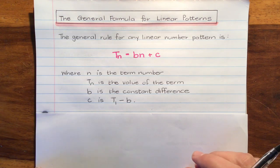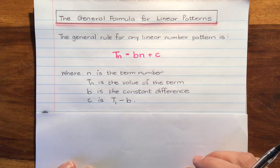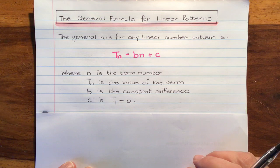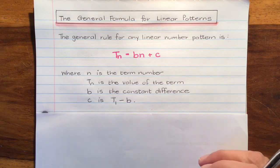The general rule for any linear number pattern is Tn equals bn plus c, where n is the term number, for instance the first term, the second term. Tn is the value of the term. B is the constant difference between the terms.